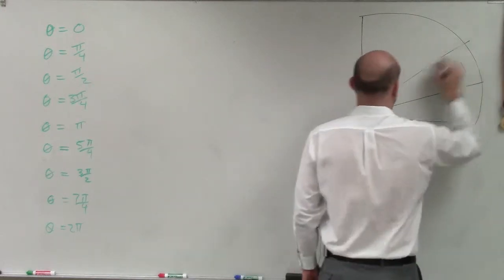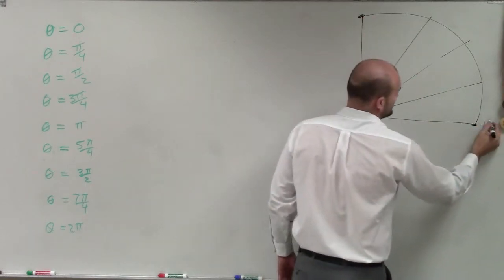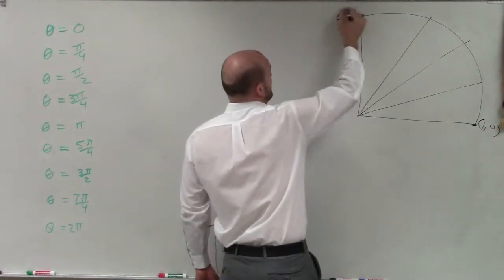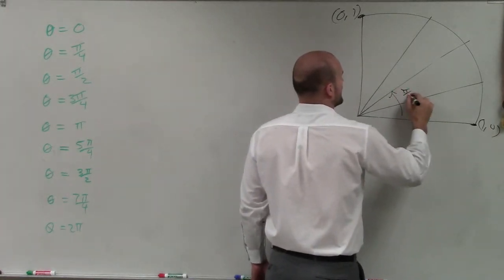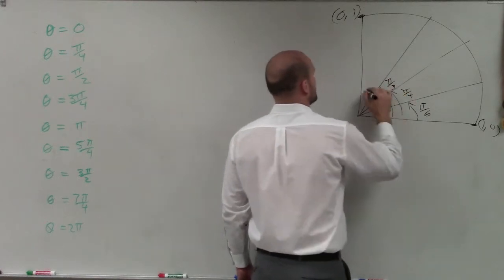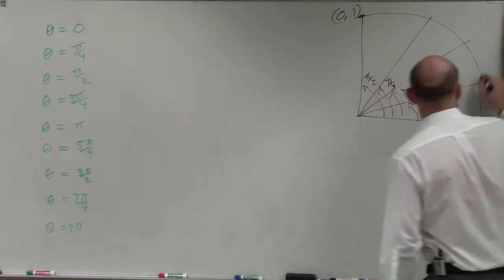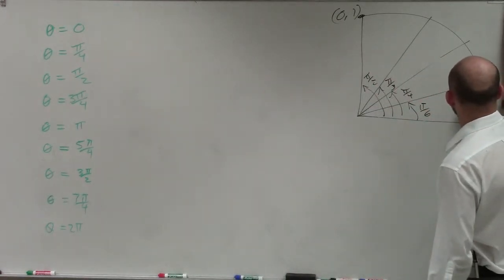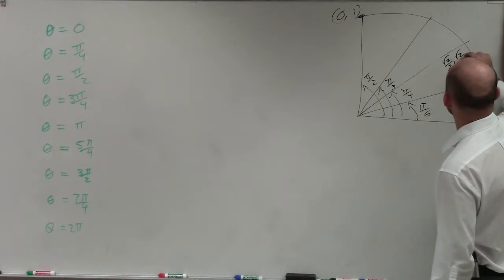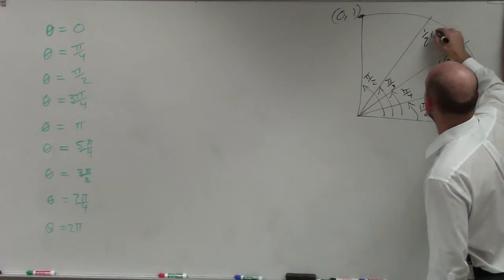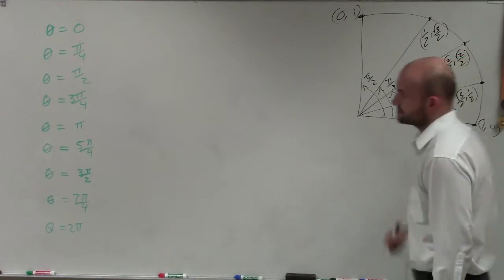When we look at the unit circle, we need to know our five important points. We know these two points: 1 comma 0, and 0 comma 1. We know that the angles are pi over 6, pi over 4, pi over 3, and pi over 2. This point is square root of 3 over 2 comma 1 half. This point is square root of 2 over 2 comma square root of 2 over 2. And this point is 1 half comma square root of 3 over 2. Those are the coordinate points for each one of these.